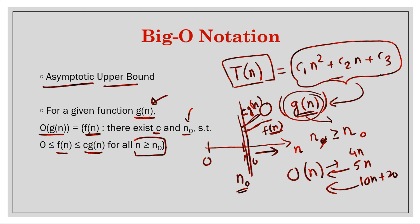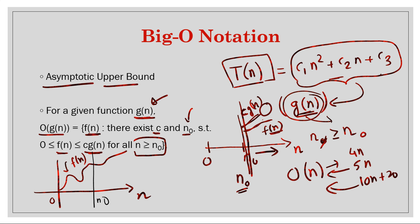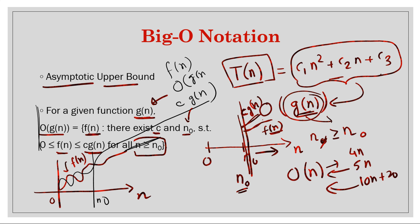The idea is illustrated graphically: we have a graph with axes 0 and n, and we plot the running time f(n) (also written t(n)). There is a point n0 on the x-axis. Before n0 the relationship may vary, but after n0 the function c·g(n) is always greater than f(n).